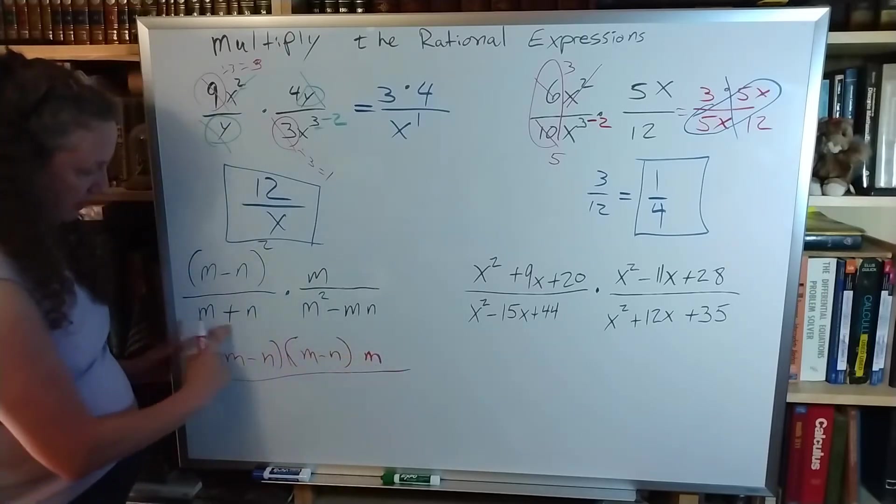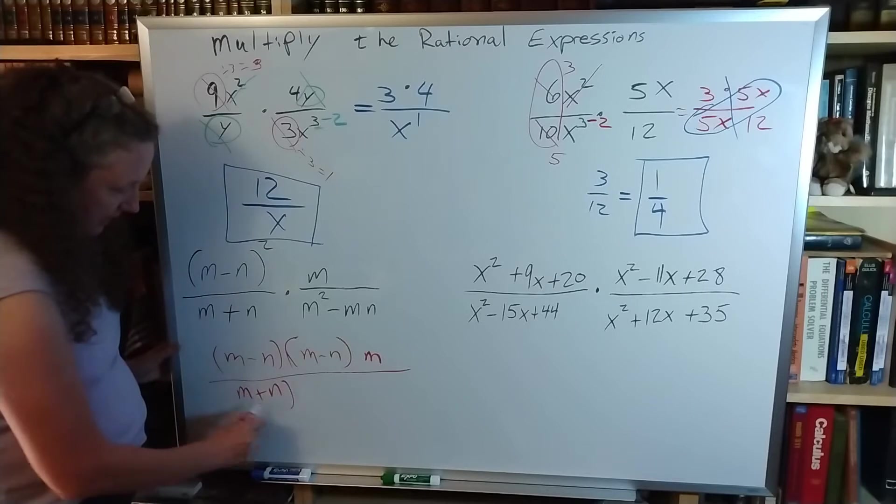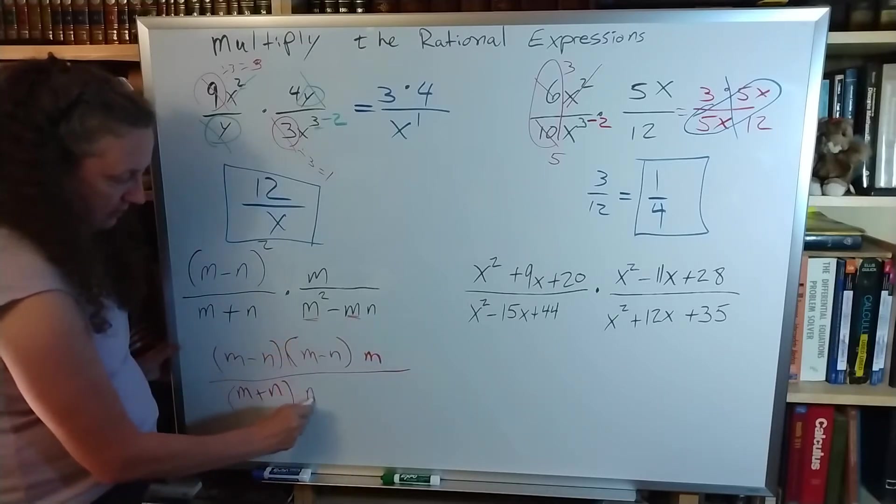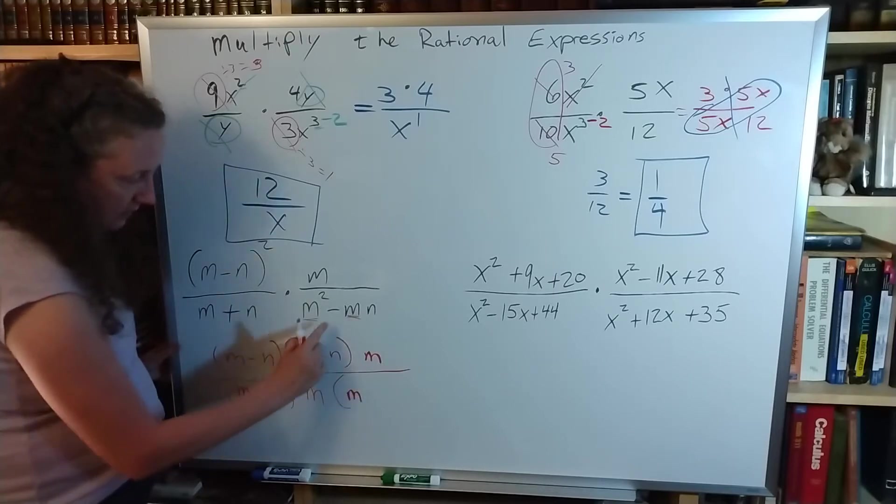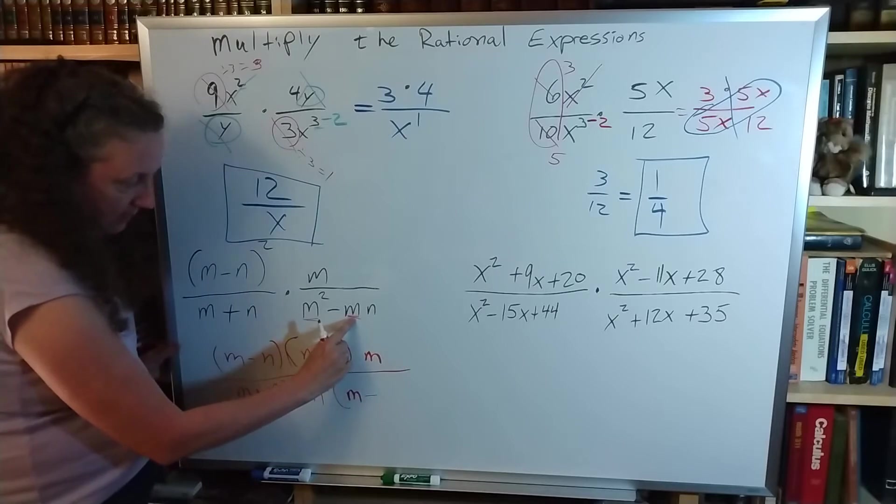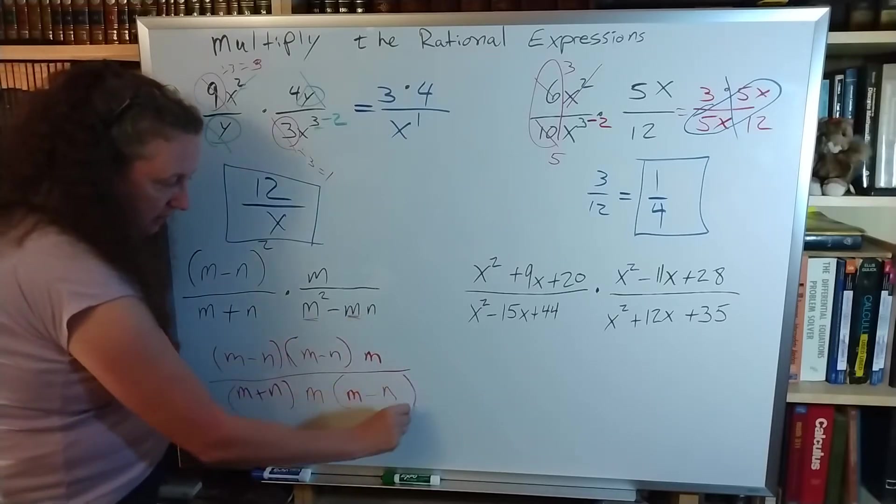So I'm going to factor all over the m plus n here, being multiplied by, and remember I'm factoring out an m from that. And when I do that, I have m to the first left minus, factored out that m, so all I have left is the n. And I've reached the end.